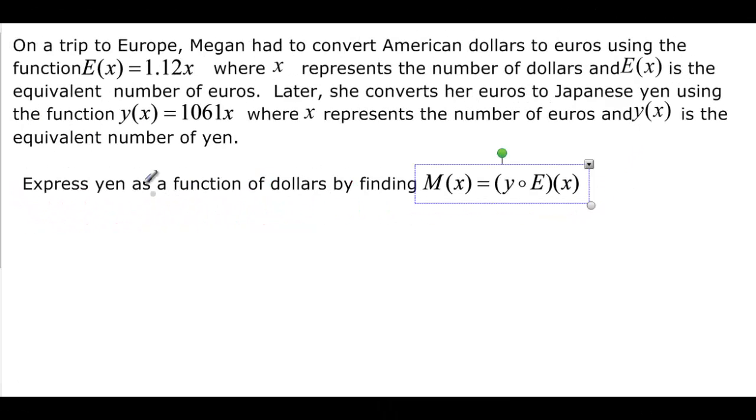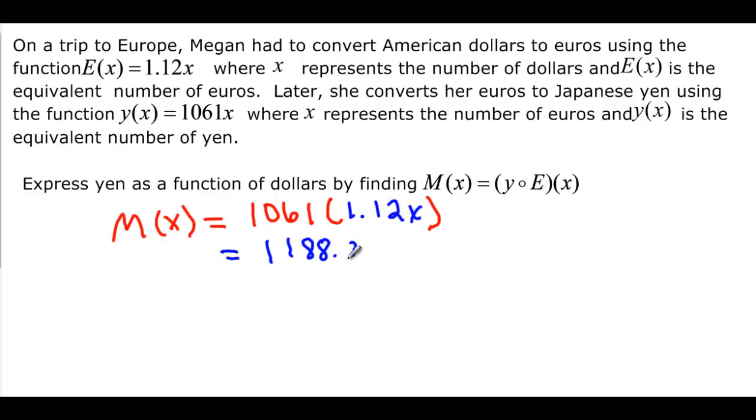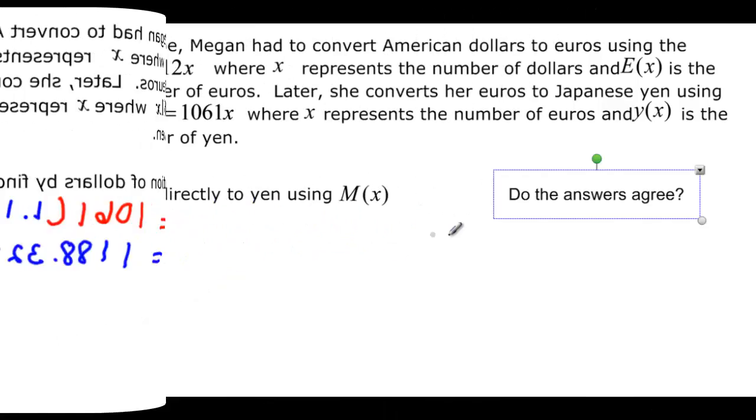Now we want to express yen as a function of dollars. So yen, doing this one, is we have M of X. Let's start there. So M of X is equal to, and then we have the yen function, which says 1,061 times. But we have to plug in there the E function, which is 1.12X. So M of X is going to be equal to 1,188.32X.